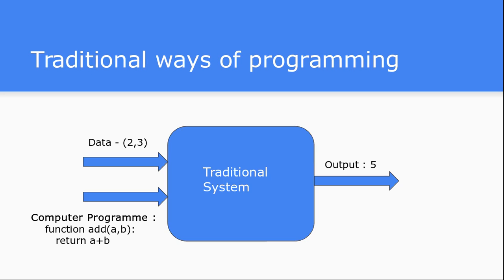Let's look at the traditional way of programming. In the traditional system of programming, you give input data and a programmer writes the computer program. You feed the data into the current computing system and it gives the output. For example, we give a simple addition computer program and supply two arguments, two and three, as input, and it gives the output. This is how the current system of programming works.